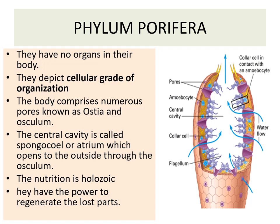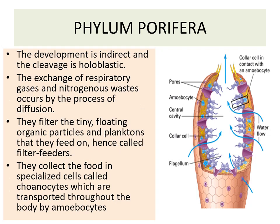The nutrition in the case of Porifera is holozoic — that is, whole food is taken by the organism, then it is digested inside the cells. They have a power of regeneration of their lost parts. The development is indirect and the cleavage is holoblastic. Indirect development means there is a presence of a larval stage.